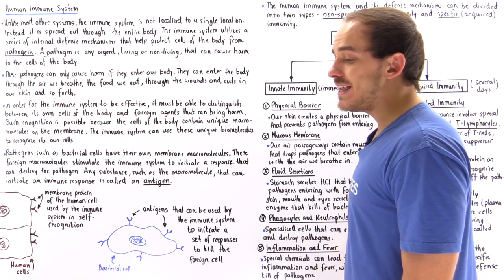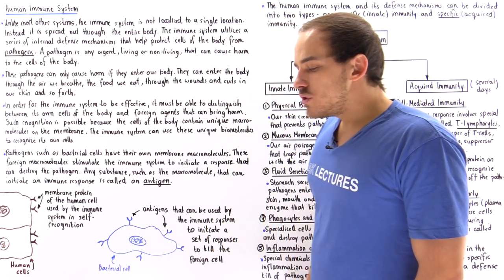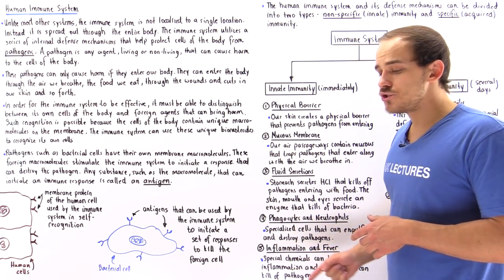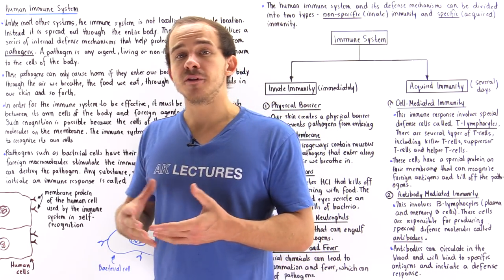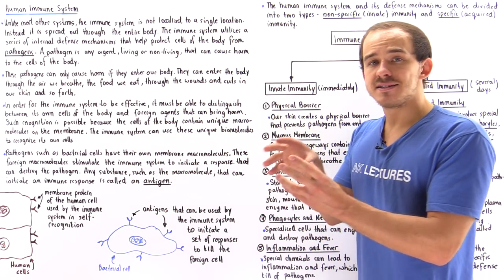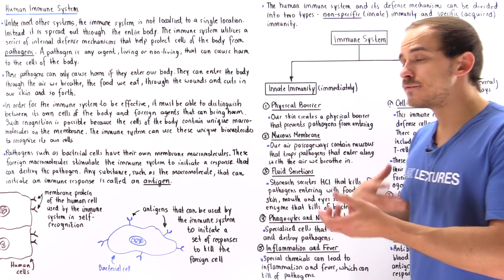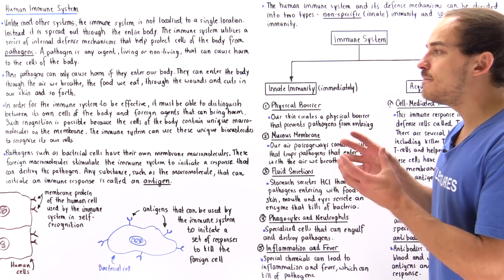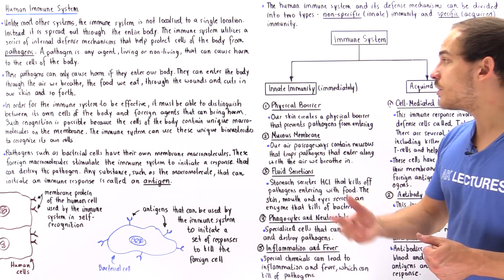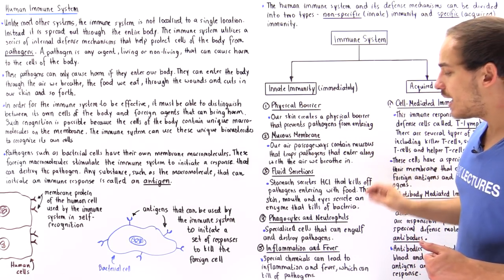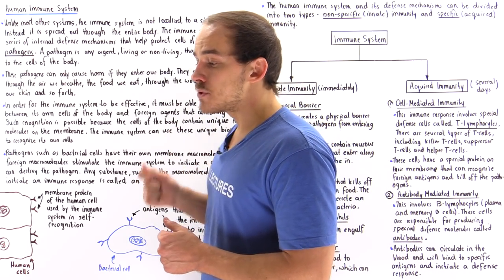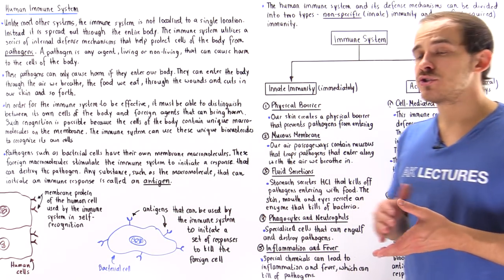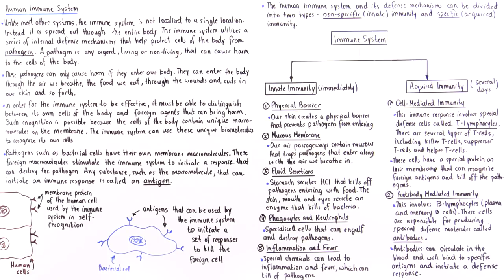Finally, we also have the process of inflammation and fever. Different types of chemicals inside our body can initiate the process of inflammation, which localizes our infection and helps bring different types of immune agents — for example, phagocytes and neutrophils — to that infected area. Fever is another type of innate immunity response because it increases the temperature of our body, which can destroy bacterial cells since they cannot survive in that elevated temperature environment.